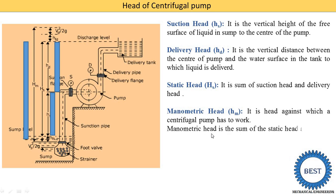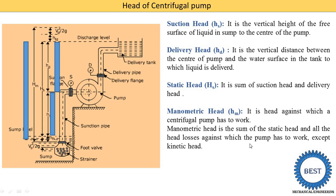The first method: manometric head is the sum of static head (capital HS) and all head losses against which the pump has to work, except the kinetic head. The various losses are: HFS — head loss due to friction in the suction pipe; and HFD — friction head loss in the delivery pipe. H means head, F means friction, and D means delivery pipe.